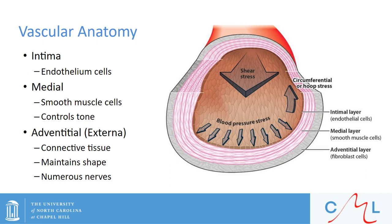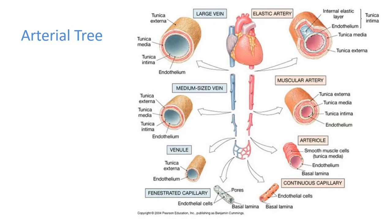If we look at a given blood vessel, we will see that it is composed of three layers. The innermost layer, the intima, is where we find the endothelial cells. The medial layer is where we find the smooth muscle cells, and this layer controls the tone of a blood vessel. The outer layer, the adventitia or externa layer, contains the connective tissue and is important for maintaining the shape of the vessel. This is where we also find the innervation of nerves. These layers are present throughout the arterial tree until we get down to the level of the capillaries, though the relative composition of each layer does differ.